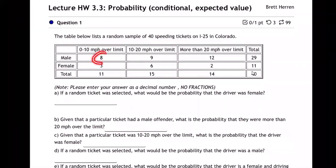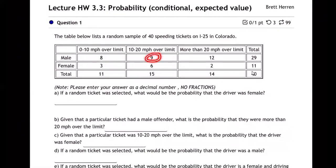Tell me about this eight right here. What is this eight? That's how many males were going 0 to 10 miles per hour over the speed limit. Eight males were barely over the speed limit, 0 to 10. Nine males were 10 to 20 over the speed limit. 12 males were more than 20 over the speed limit.